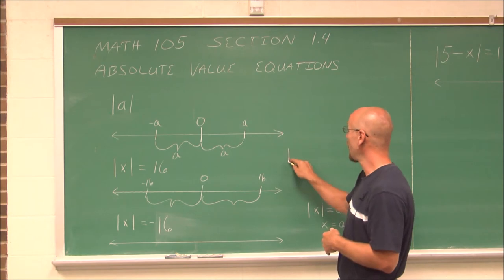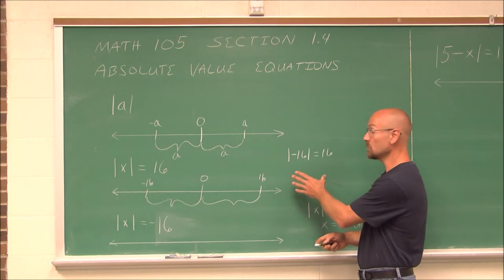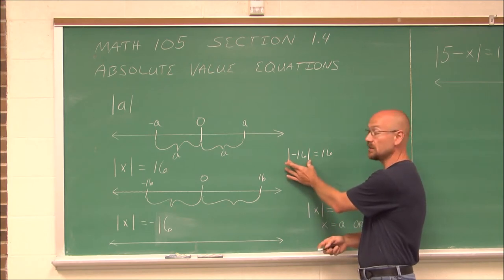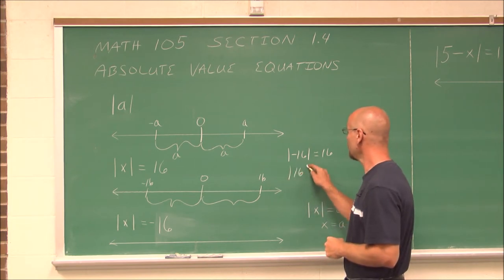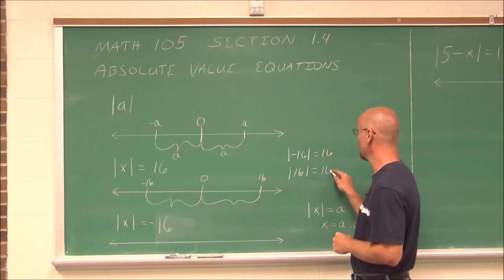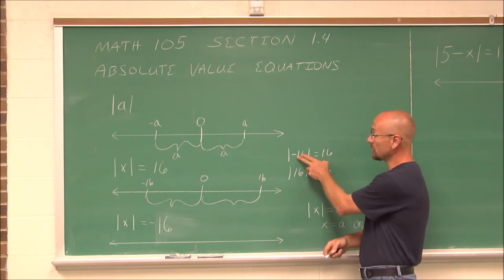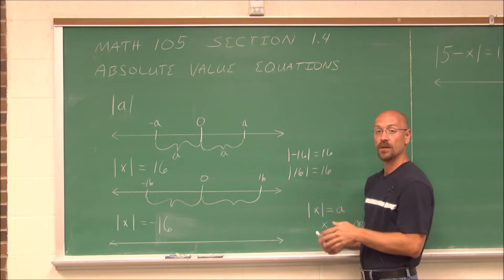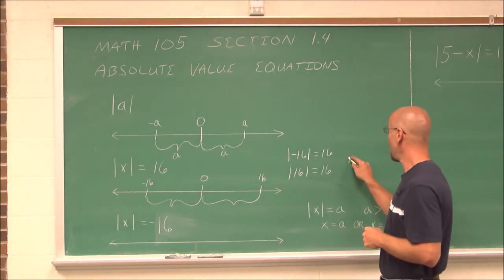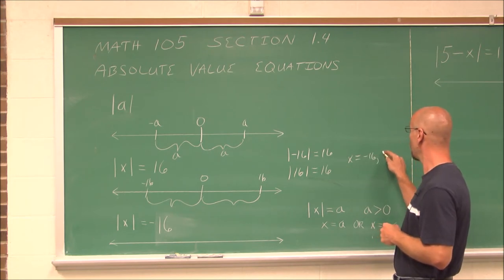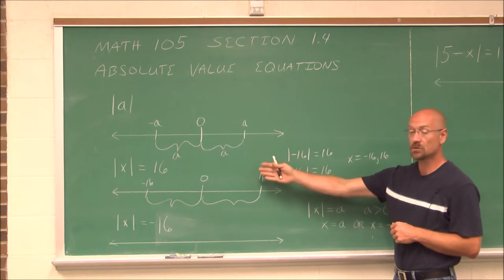The absolute value of negative 16 is 16 — that's a true statement. How far is negative 16 from 0? It is 16 units away. How far is positive 16 from 0? It is 16 units away. So absolute value indicates either to the left or to the right, and x is negative 16 or positive 16. Both make this a true statement.